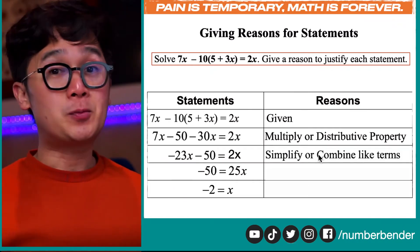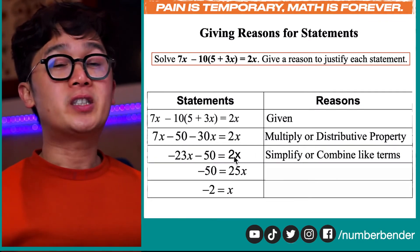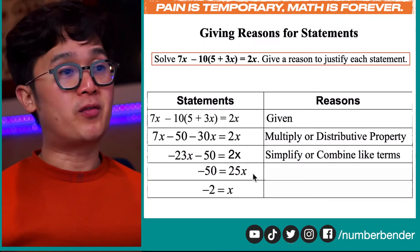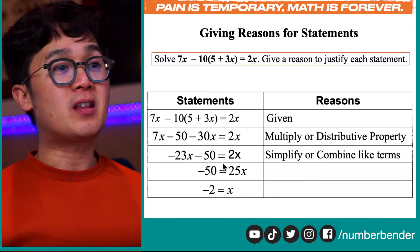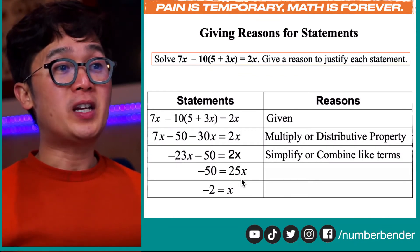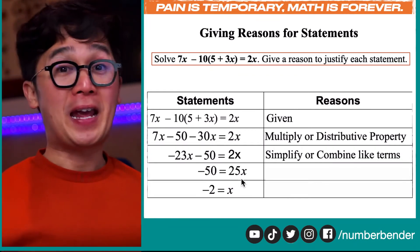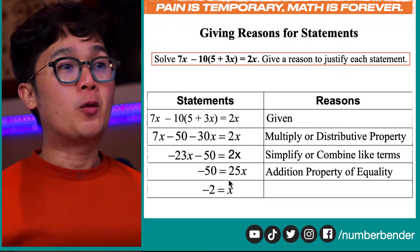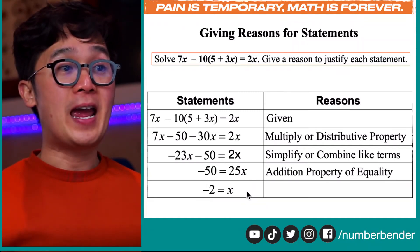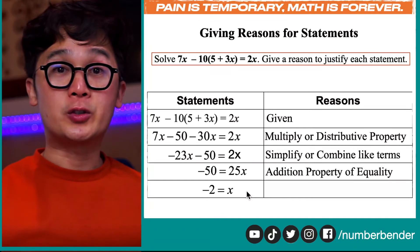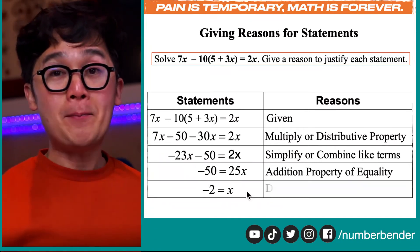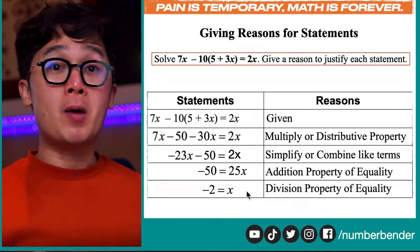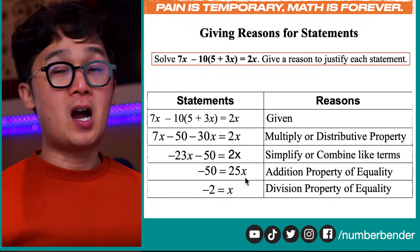From line 3 to line 4, we added 23x to 2x to get 25x, so we use the addition property of equality. For the last step, we divided both sides by 25 so that x is by itself, equal to negative 2. The last reason is the division property of equality. This is how we warm up and get comfortable writing a two-column proof by using a skill we're most used to — solving a simple linear equation.